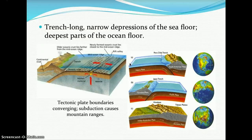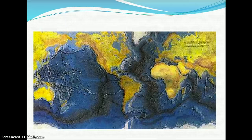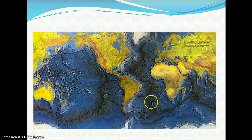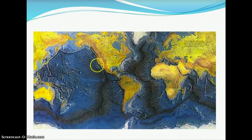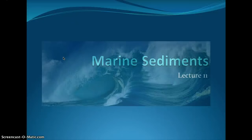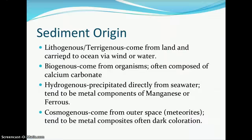Here we can see the mid-Atlantic ridge with its rift valleys, pushing toward the African and Eurasian plate and toward the North American and South American plates. Over here is the East Pacific Rise — also known as part of the Ring of Fire.